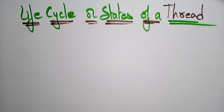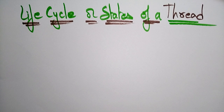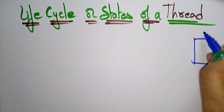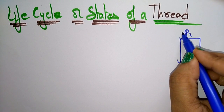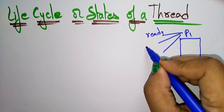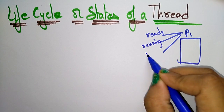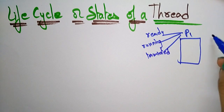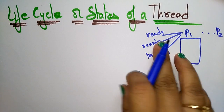Let us move to the next topic: the life cycle or different states that are present in a thread. In the previous video I gave an introduction to threads. A thread is a lightweight process, and just like a process has different states, a thread also has different states. A process can be in ready, running, or terminated state, and each process has different states.